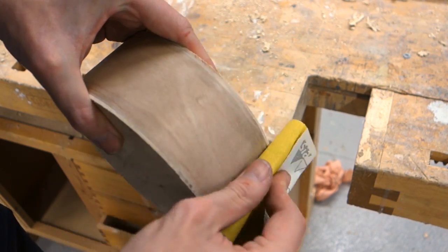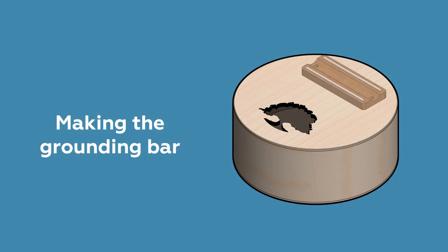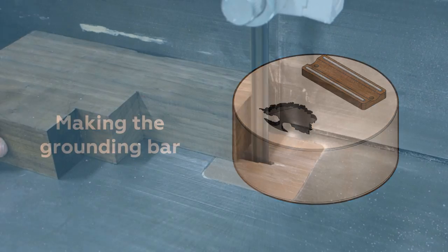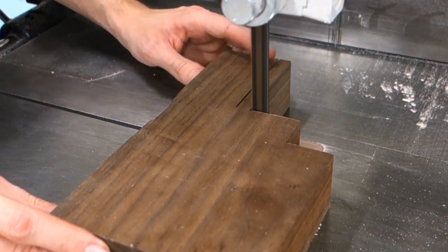Of course, what we have now more resembles a drum than a kalimba. To proceed, we need to make a grounding bar to attach the tines, which will create the sweet tones. The base for the grounding bar is made from a piece of walnut, simply sawn and sanded down to shape.